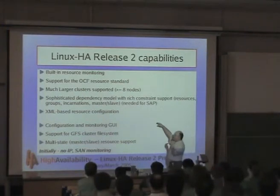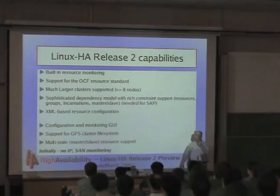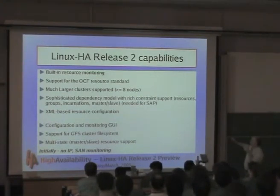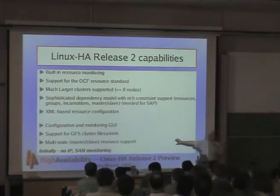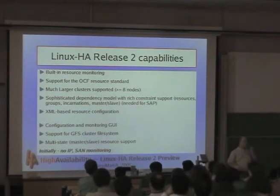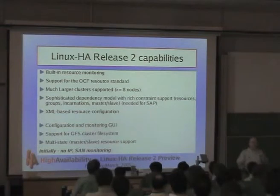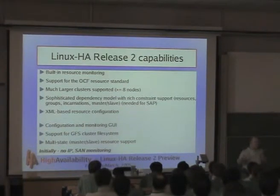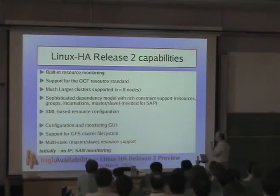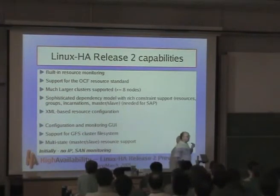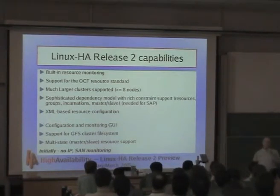Some things are not currently in CVS yet but we're working on them and they'll probably occur by June — things like a configuration monitoring GUI, integration with GFS for the next talk. Multi-state master-slave resources are also being added. Most HA software handles master-slave states with a combination of workarounds; we're trying to handle it more directly. Unfortunately, release two will not initially have ICS and STONITH-style features like release one does — that's something we need to think about how to do right.